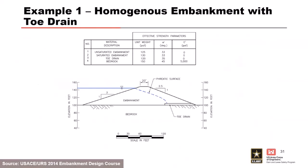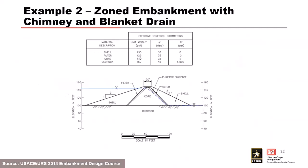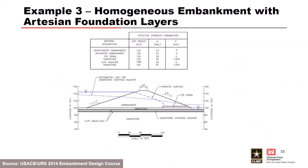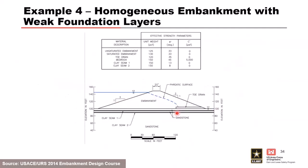The cross-section examples include: a homogeneous embankment with a toe drain; a zoned embankment with a chimney and blanket drain; a homogeneous embankment with an artesian foundation layer where the pore pressure in the embankment connects to the blanket drain and a higher piezometric line exists for a confined aquifer layer at the toe; and a homogeneous embankment with a couple of weak clay seams.